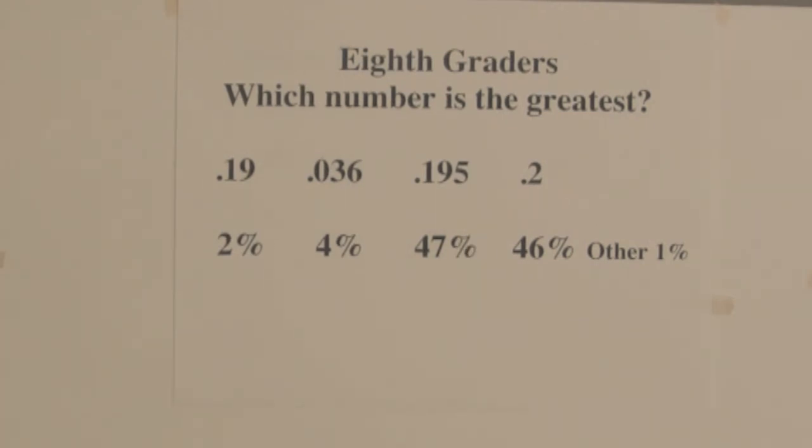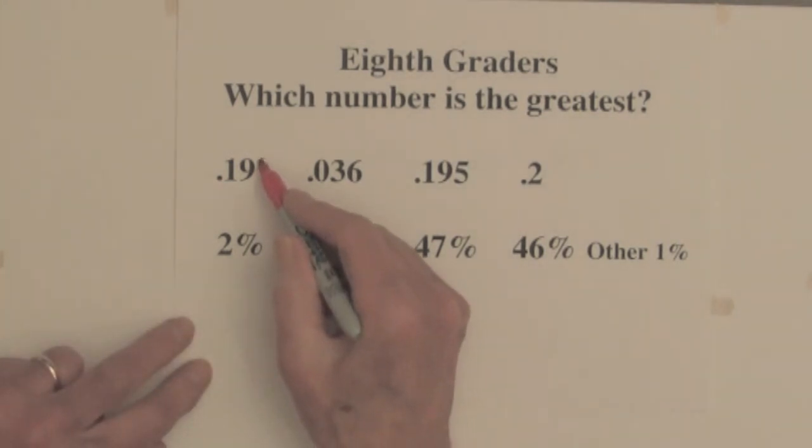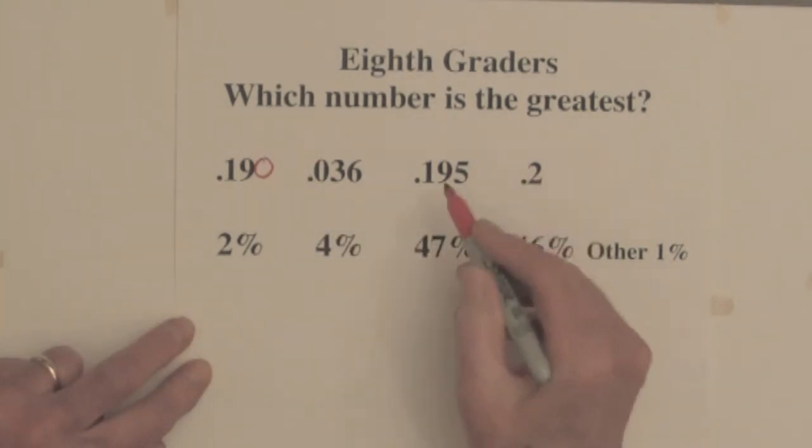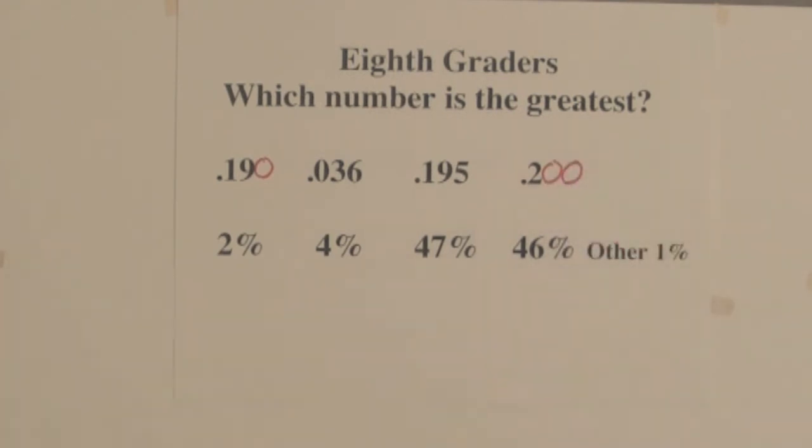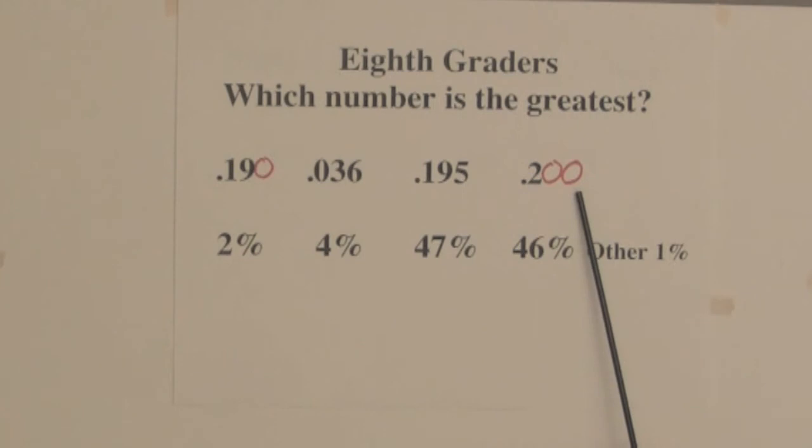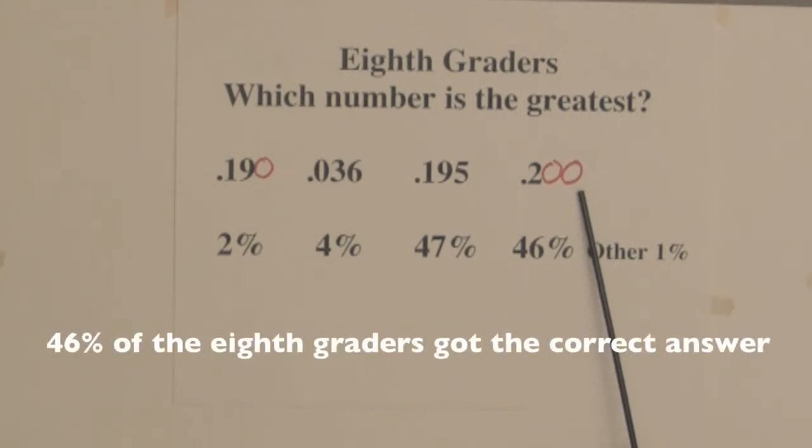But we know that a lot of small parts may not be greater than a few large parts. Notice that this question becomes easy if we place zeros so that each decimal has the same number of places. Two hundred parts out of a thousand is going to be greater than any of these other parts, especially 195 parts out of a thousand.